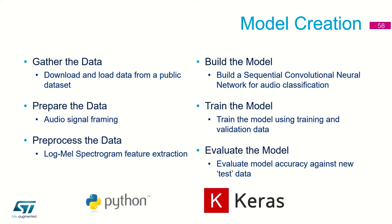Then, having the ready learning dataset, we'll be able to build the model. This is the fourth step: building the model using the Keras library. The fifth step is to train the model — the core activity of this part. And then the sixth step is to evaluate the model by testing its accuracy against new unknown data, the so-called test dataset.